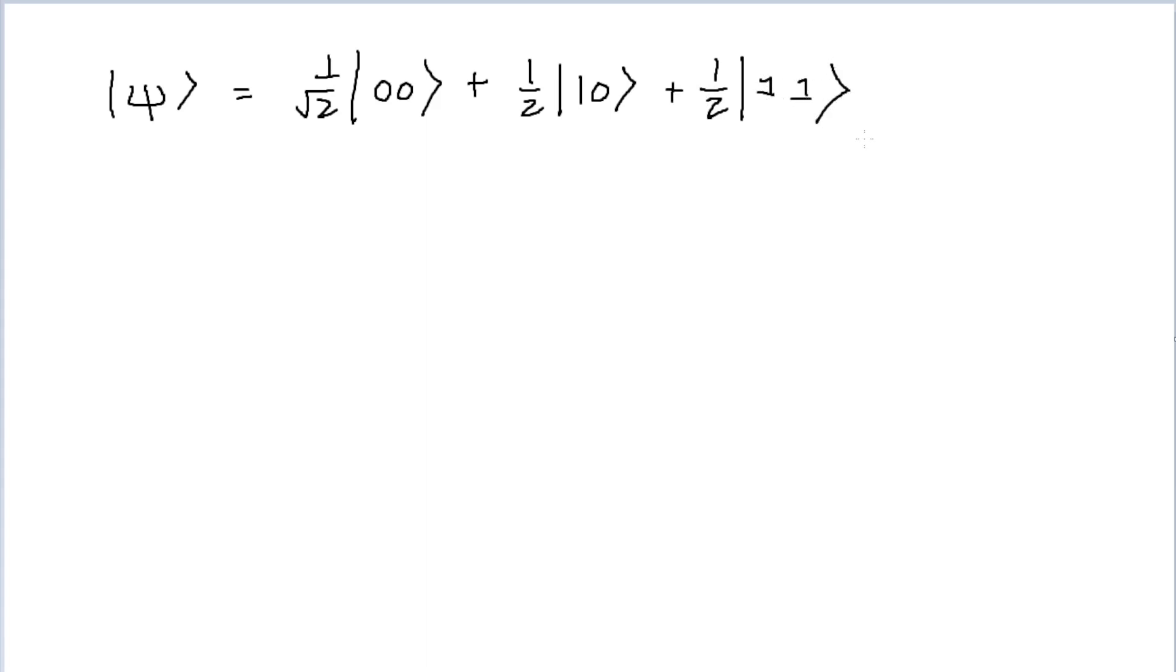Now just briefly recall, if we want to ask what is the probability of measuring both of our qubits and resulting in both of them coming out to be zero, the probability of that will be expressed as one over root two, because that's our probability amplitude squared, which is equal to one half, which is equal to a 50% probability. Similarly, the probability of having the qubits be measured with the first one being one and the second one being zero is equal to one over two squared, which is equal to one over four, which is a 25% chance of occurring.